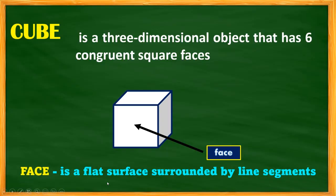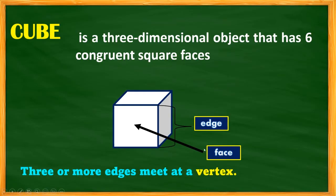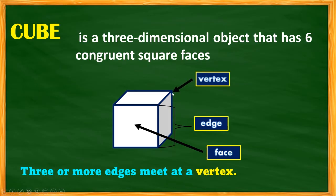A face is the flat surface surrounded by line segments. An edge is where two faces meet at a line segment. A vertex is a point where three or more edges meet. So for the cube, where edges 1, 2, and 3 meet forms a vertex.